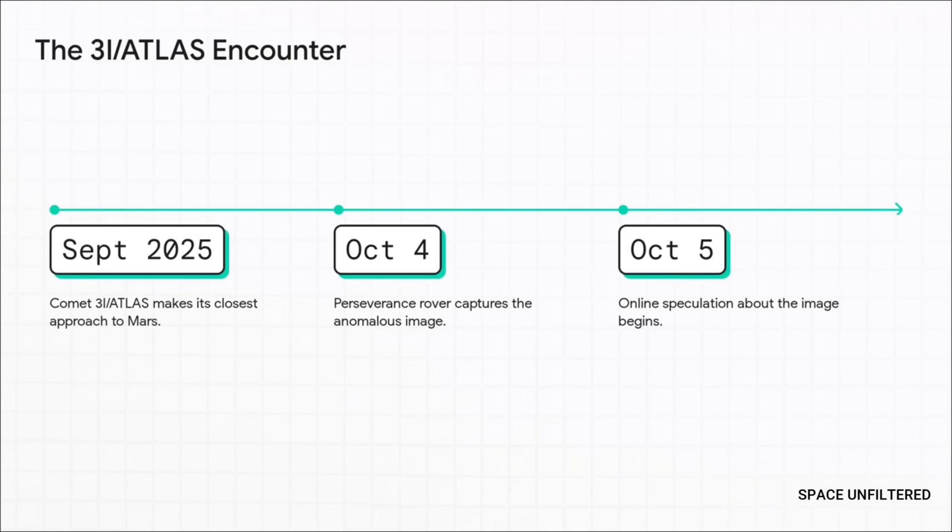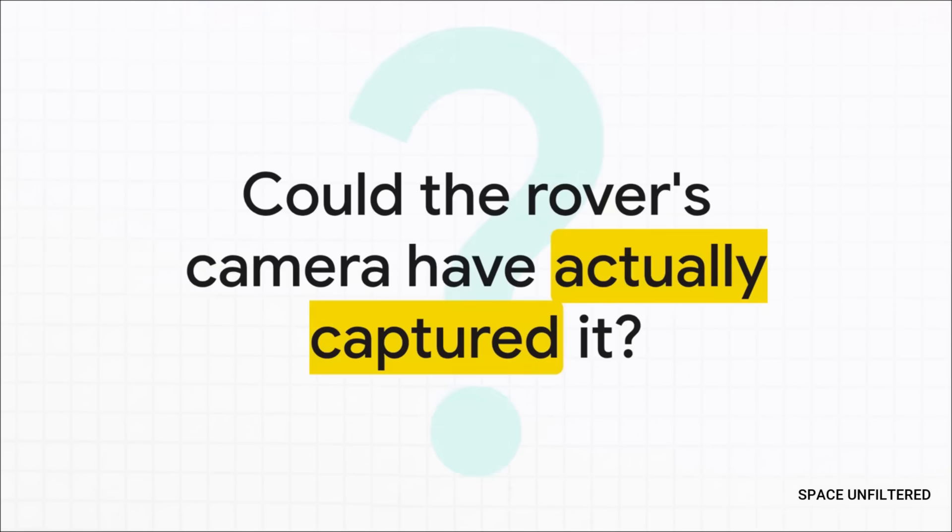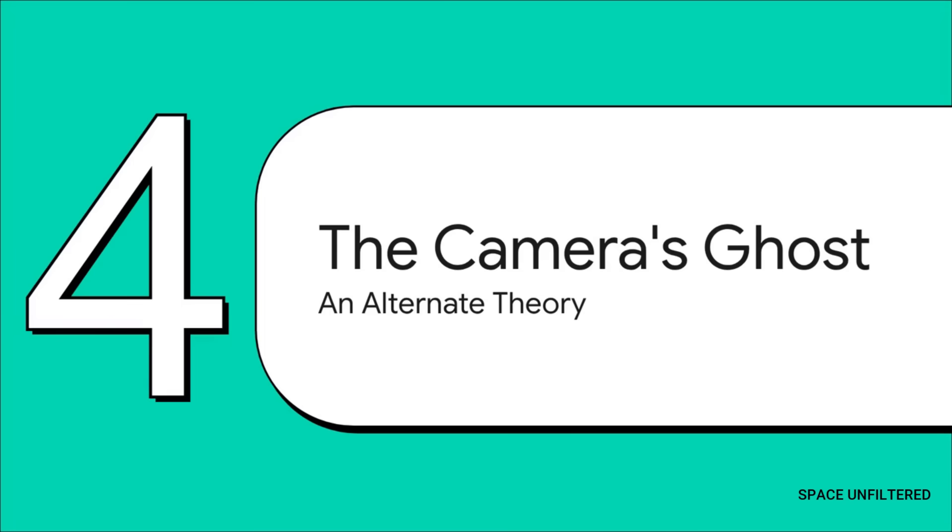The online discussion starts almost immediately. You can see why people connected the dots, right? The timing just seems too perfect to be a coincidence. So you've got this interstellar object in the neighborhood right around the time a strange picture is taken from the surface. The next logical question has to be, could the rover's camera actually have seen it? Is that even possible? To answer that, we actually have to stop looking at the sky and start looking at the camera itself.